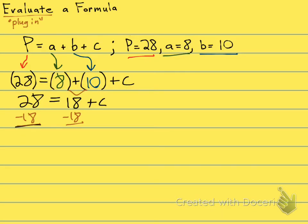28 minus 18 is 10. 18 minus 18 is 0. And there's my answer. 10 equals C, which is the same thing as C equals 10.